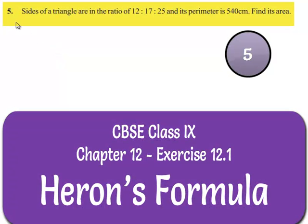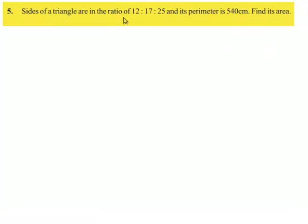Now let us move on to the fifth question. The sides of a triangle are in the ratio of 12 is to 17 is to 25, and its perimeter is 540 cm. Find its area.